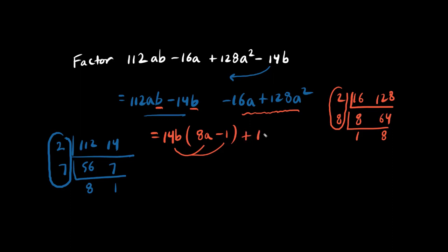Let's pull out the GCF of 16a, because a fits into both. Now, what we're going to do is 16a times 8a becomes the second term here. And 16a times negative 1 becomes the first term here.